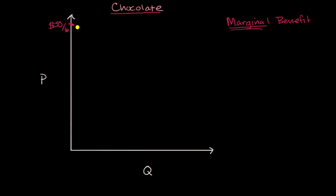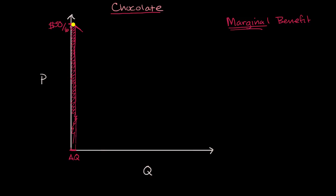As more chocolate becomes available, people still like it, but some of that deep need — that deep addiction for chocolate — has been satiated, and so the marginal benefit tends to go down as quantity increases. That first small amount of quantity, if you multiply it times the marginal benefit, that gives you the area of roughly a rectangle under the curve. The area under the marginal benefit curve represents the benefit the market is getting from consuming this chocolate. As more and more chocolate becomes available, people aren't as excited; at some point they might be all chocolated out and get zero marginal benefit from that incremental amount.